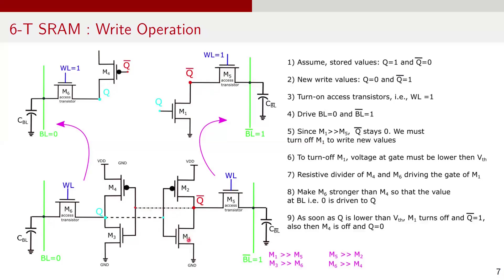In the read operation, we discussed that M1 needs to be stronger than M5 to keep node Q bar at 0 and ensure data integrity and prevent unintended state changes. However, during the write operation, we need to turn off M1 to successfully write the new value.